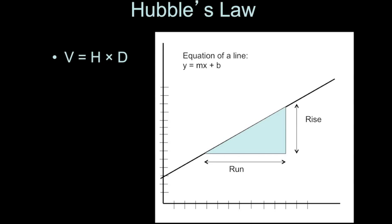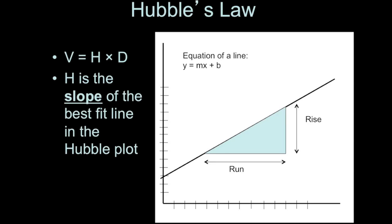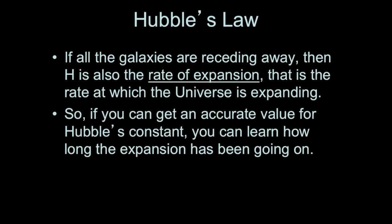For a Hubble plot, the line always intersects the y-axis at zero, so we don't need a y-intercept. Hubble's Law — velocity equals H times d — is the same as the equation of a line, where H, Hubble's constant, is the slope. If you know H, you know the expansion rate. And if you can figure out an accurate value for Hubble's constant, you can learn how long the universe has been expanding.